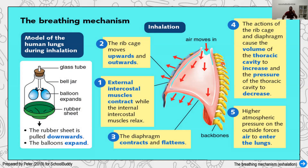To make it easier to understand, we use a balloon model. You can actually build this model in your school lab. The glass tubing represents the trachea branching into the bronchus, the bell jar represents the chest cavity, the balloon represents the lung, and the rubber sheet is equivalent to the diaphragm.